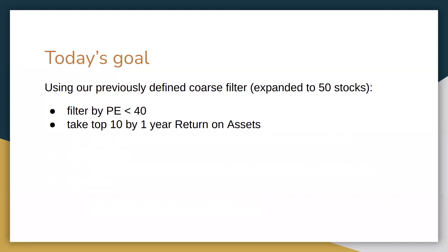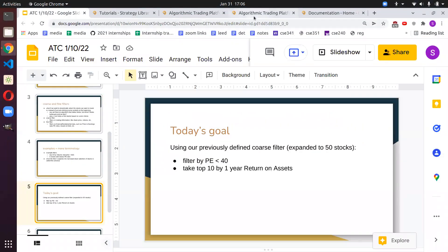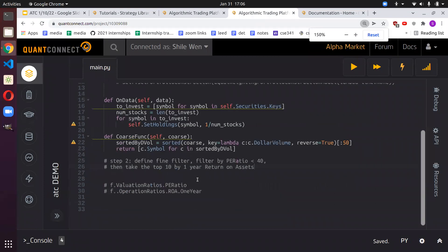Another fundamental factor we can analyze is return on assets — based on how much assets you have, what return do you get? If you have two thousand dollars in assets and you make a thousand dollars, your return on assets is 50%, because for every dollar in assets you made half that amount. We want to filter by P/E ratio less than 40 and take the top 10 by one-year return on assets.